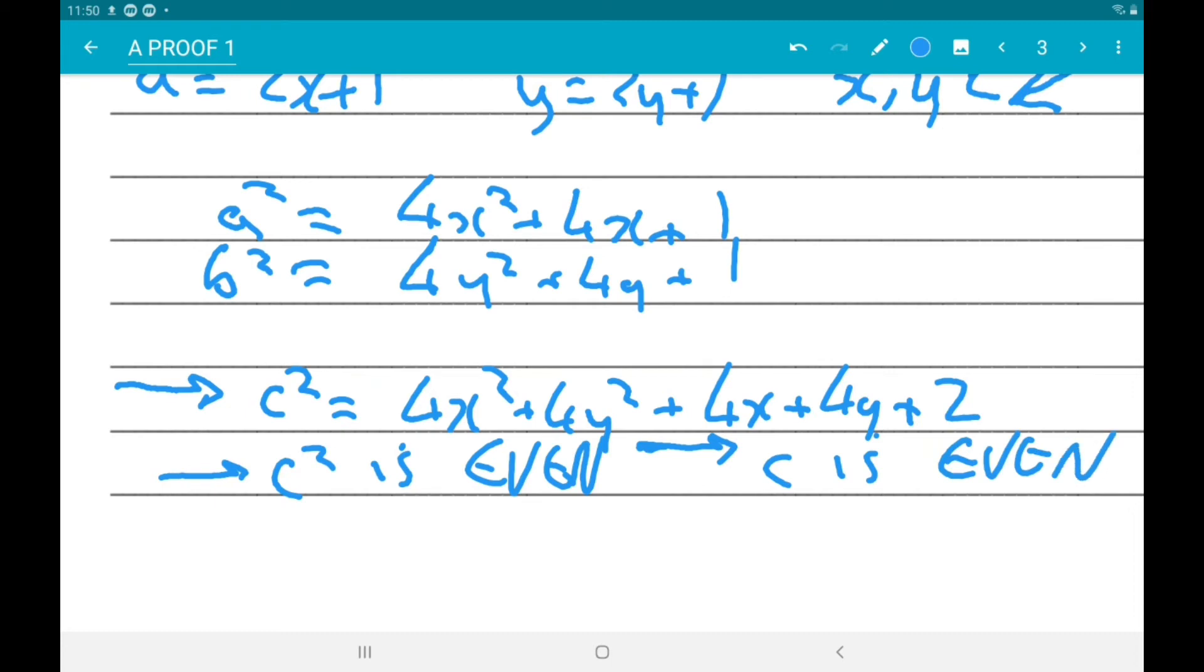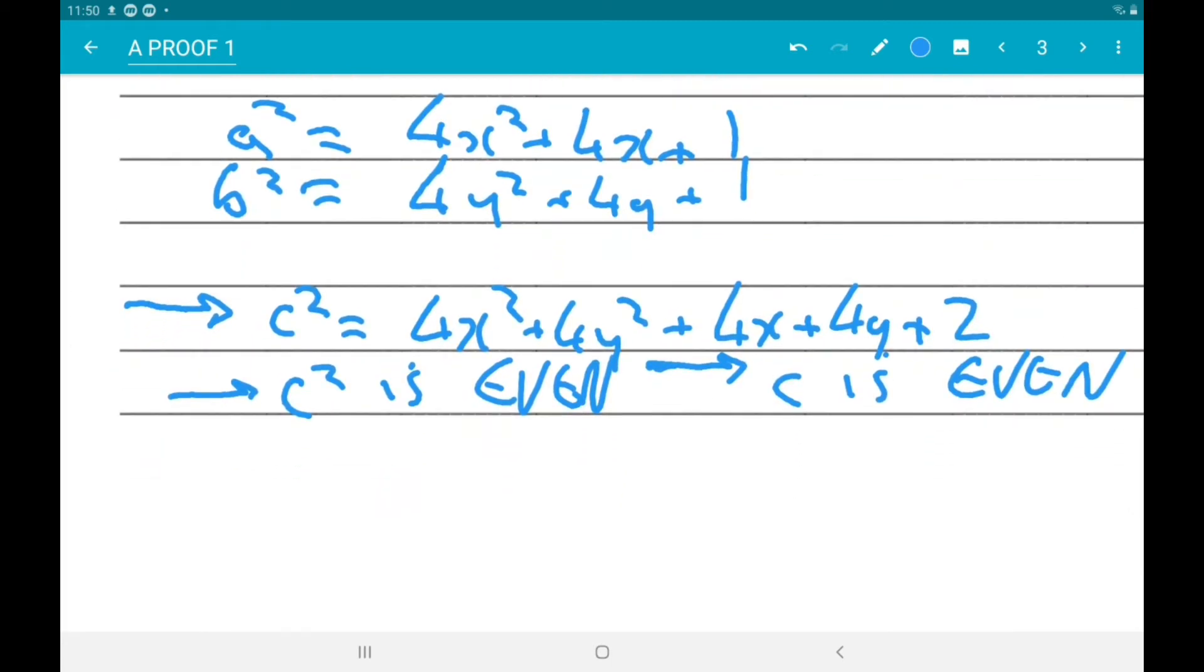So then, finally, that tells us a, b and c cannot all be odd.